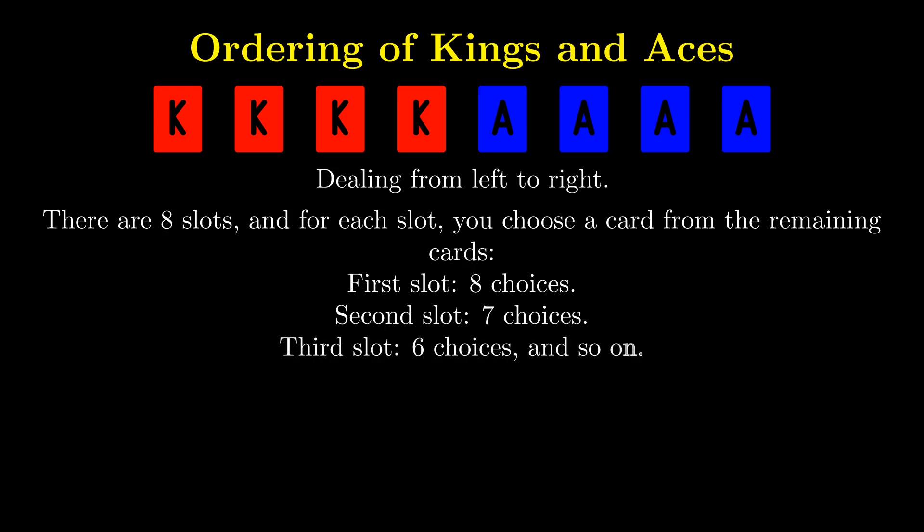For the third slot, you have 6 choices, and so on. So the total number of arrangements is 8 times 7 times 6 and so on, which gives us 8 factorial.